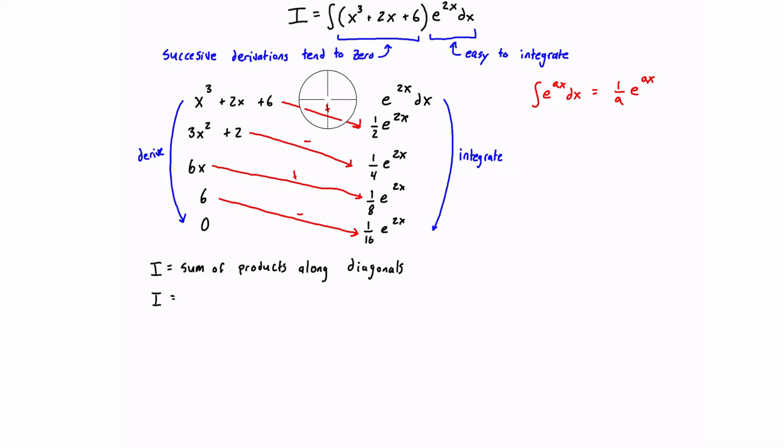So the first term here is going to be the product of these two guys. And we'll assign it a plus sign in the summation. So the first term here will just be 1/2 e^(2x) times (x³ + 2x + 6).